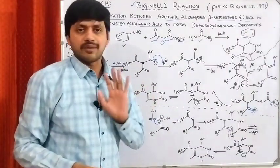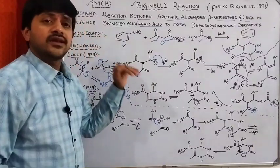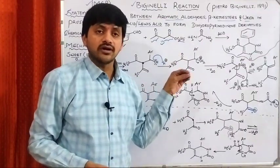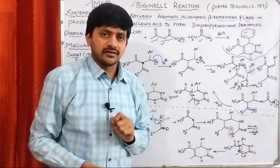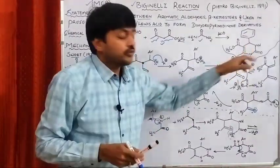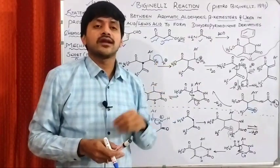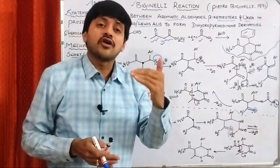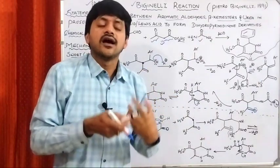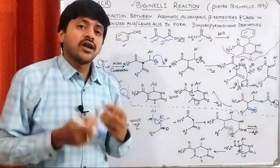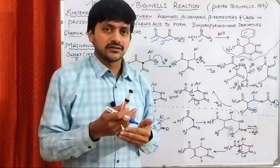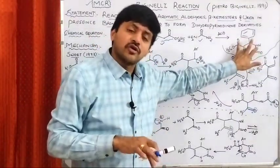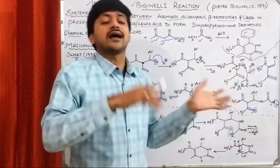Nowadays we follow the Kappe mechanism only. This reaction is a very, very important reaction. Most of the research work is going on based on this particular reaction. Because these dihydropyrimidinone derivatives have very important medicinal properties, the formation of different derivatives and hybrids with these moieties is very important. All are working on hybrid molecules — the final molecules may contain dihydropyrimidinone moiety with chalcone moiety, triazole moiety, or other heterocyclic moieties.